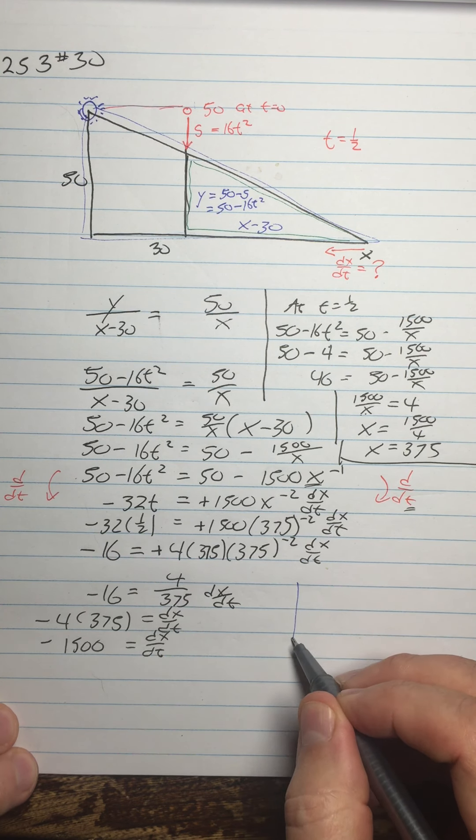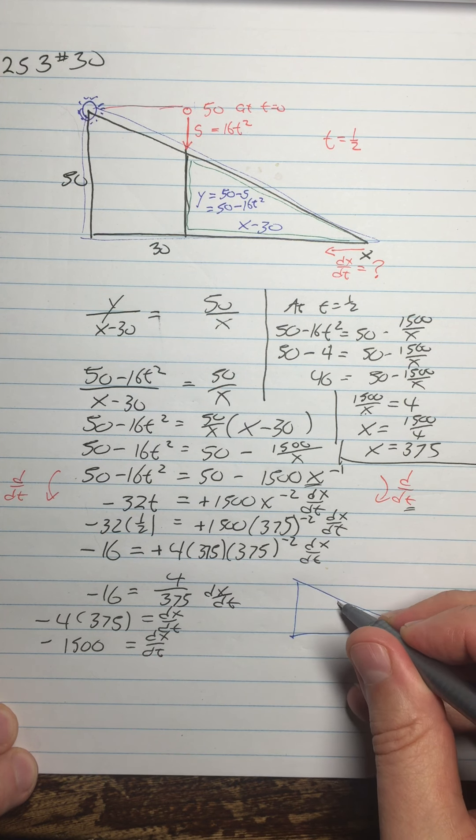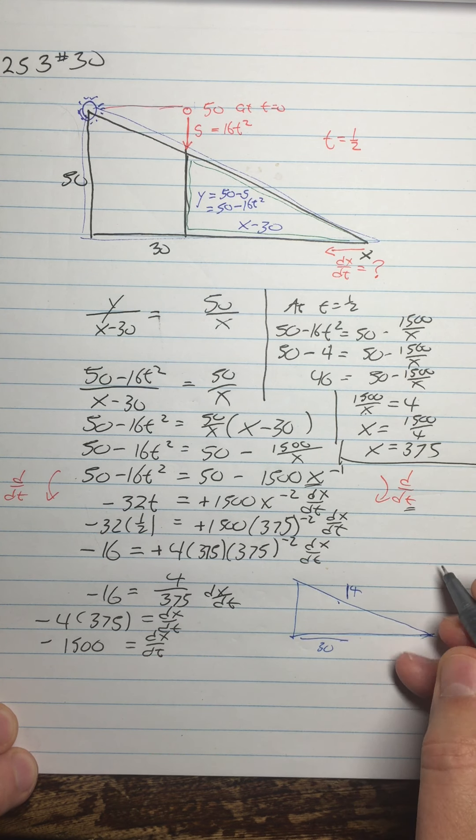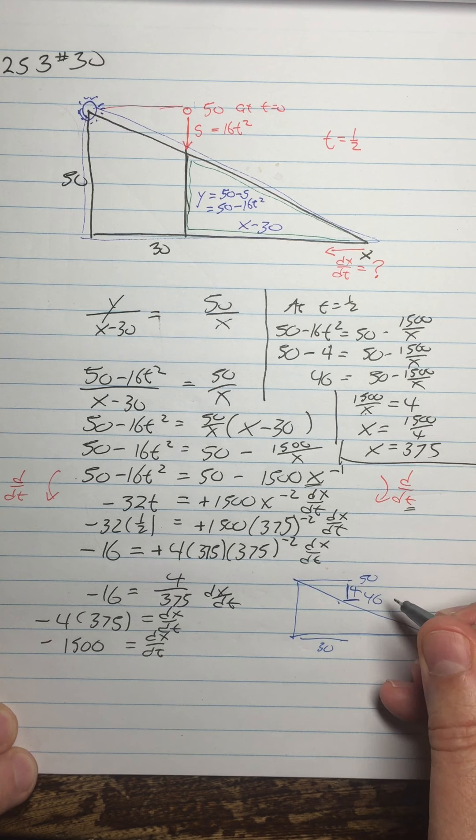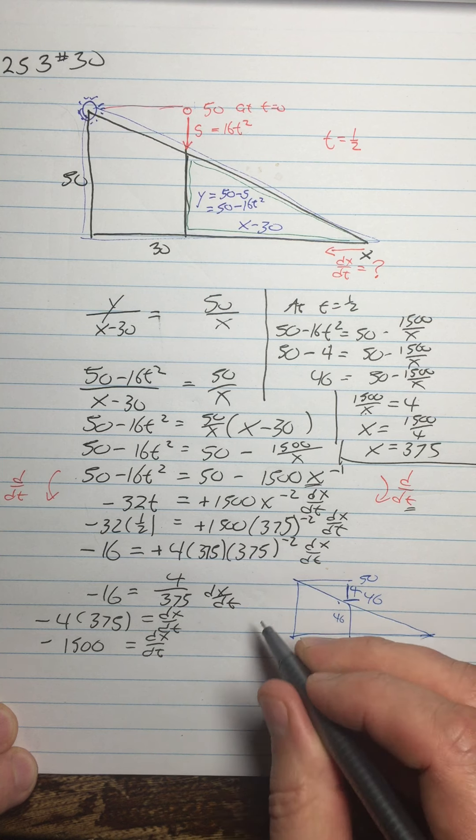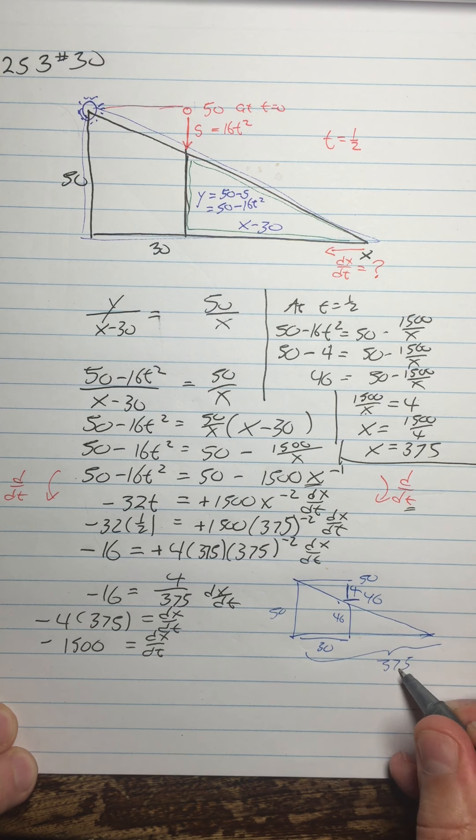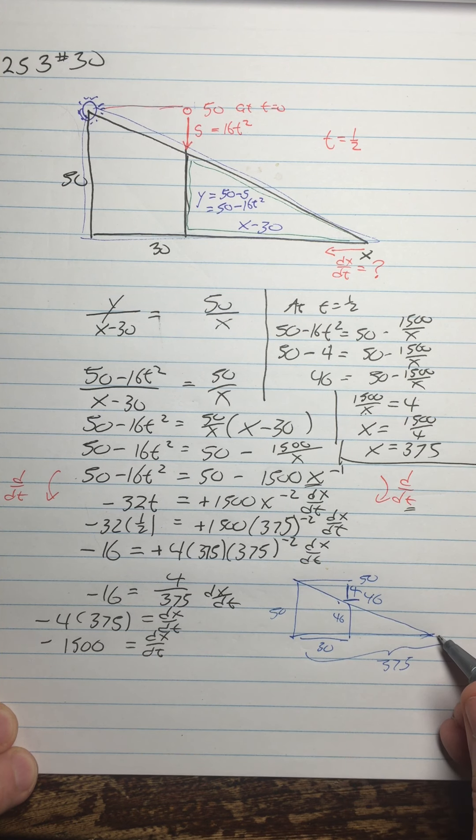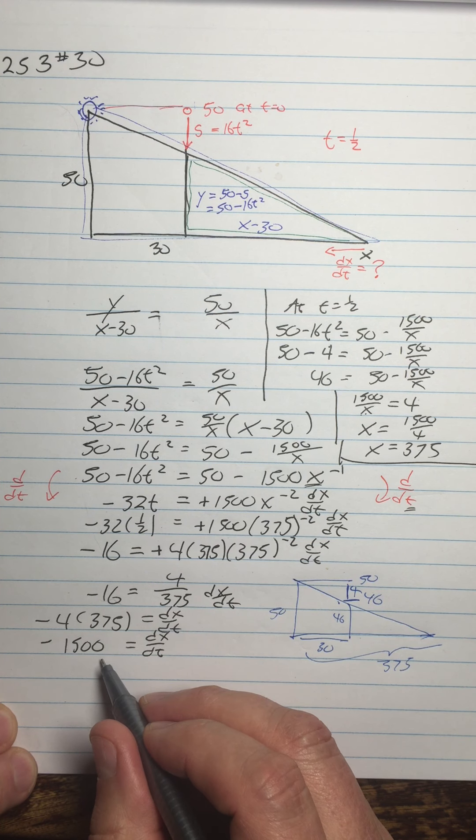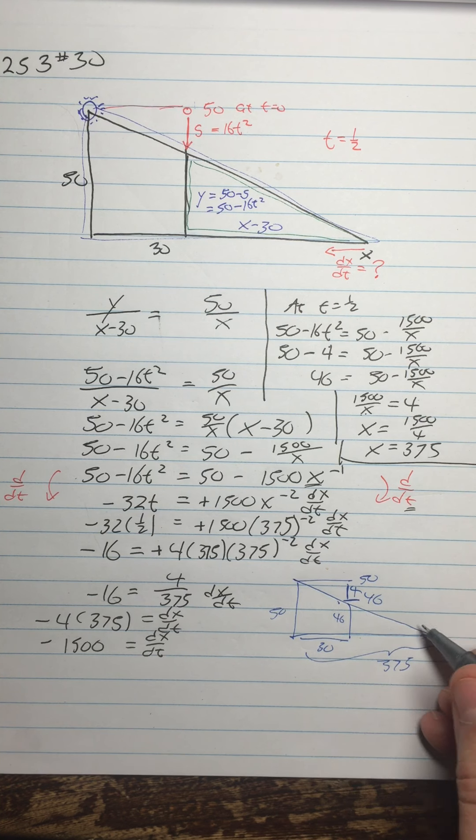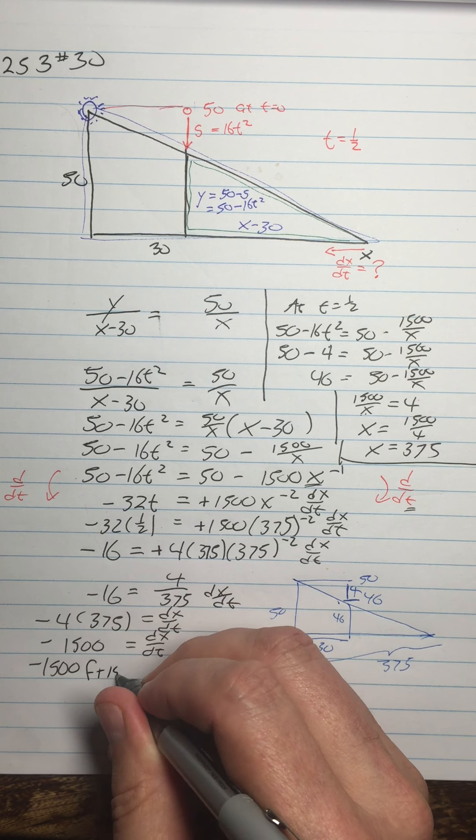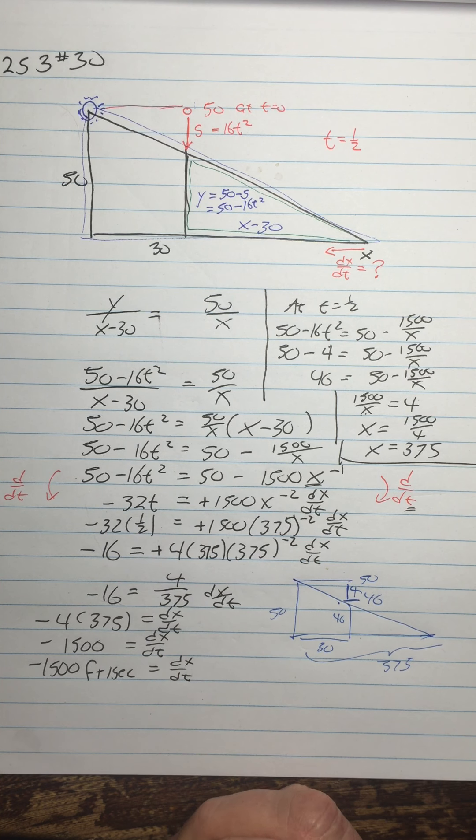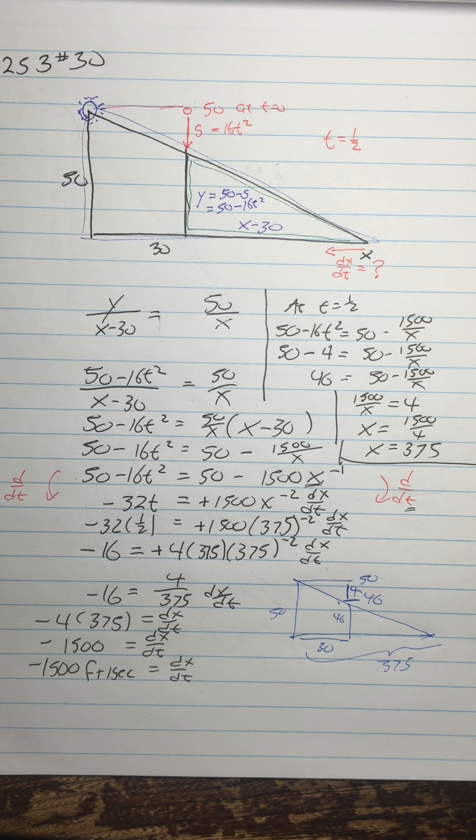But it actually makes sense if you sort of diagram out what's going on here with this picture. So we're here 30 feet out, but we've only gone 4 feet down. So if you take t equals 1 half and put it in here, you get s equals 4 at t equals 1 half. So this height is 46 feet, this height is 50 feet, and this is 30 feet. So this is 46, this is 30, this is 50. Now it starts to make sense that this could be 375. Because you haven't gone down very far, so this angle is very shallow. Then also, this ridiculously high number of negative 1500 feet per second starts to make sense because this angle is so shallow that by the ball dropping a little bit, that shadow is going to move very, very fast. All right, so that negative 1500 feet per second looks suspicious. But if you really examine what's going on in the problem, it's actually quite reasonable. All right, so there you go, there's that one. And that's all the examples I'm going to do for you.